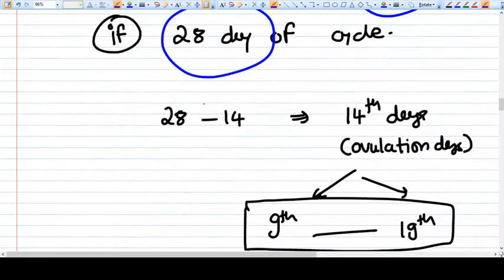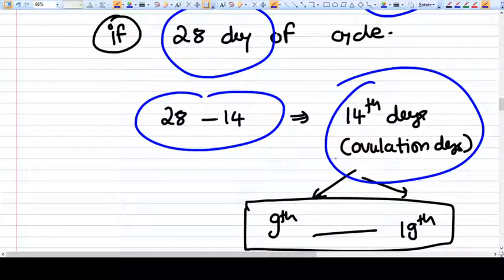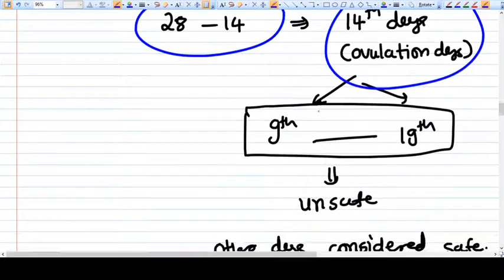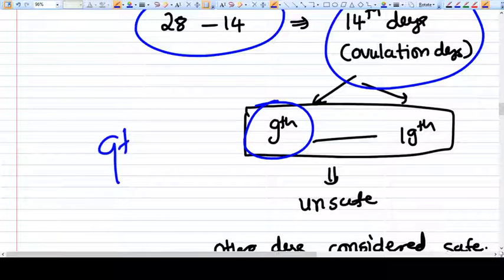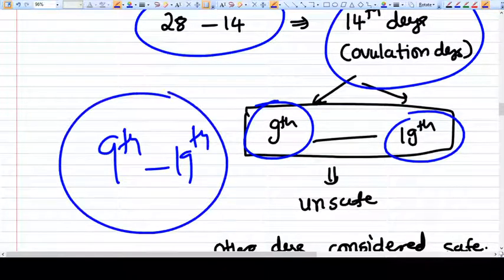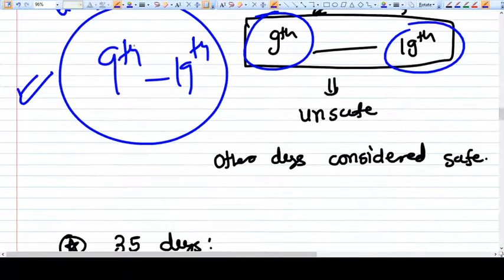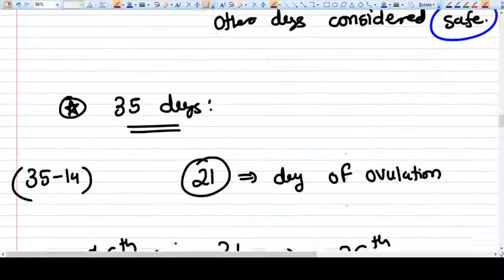That means if a 28-day cycle is there and we minus 14 from the 28, then 14 days come as ovulation day. So 14 minus 5 is the 9th day, and 14 plus 5 is the 19th day. This 9th to 19th day is considered as unsafe.